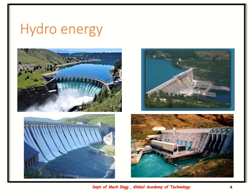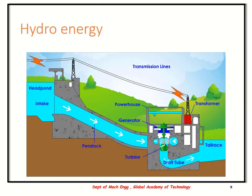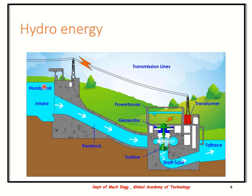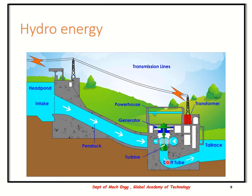The next form of energy is hydro energy, involving utilization of water as the source. The water is stored at the reservoir, also known as the head pond, and this forms the intake. This water is then made to pass through the penstock and through the turbine, converting potential energy into kinetic energy in the turbine, and the power is extracted and transmitted. The spent water is then made to pass through the tailrace through the draft tube, depending on the type of turbine utilized.